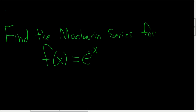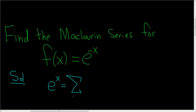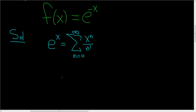Find the Maclaurin series for f(x) = e to the negative x. To do this problem, we're going to use the Maclaurin series for e to the x. The Maclaurin series for e to the x is the infinite sum, as n runs from 0 to infinity, of x to the n over n factorial. This converges absolutely for every real number x.